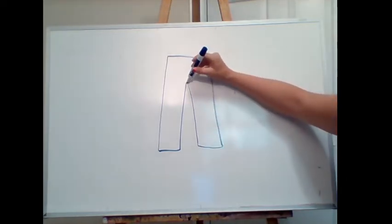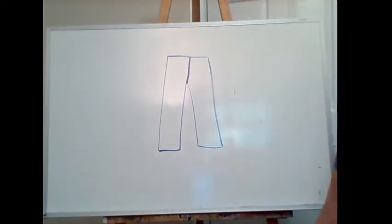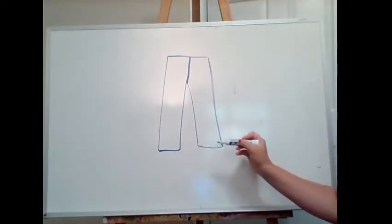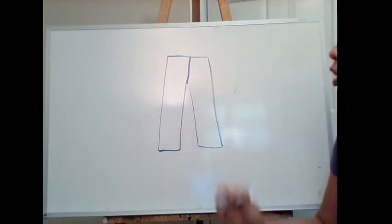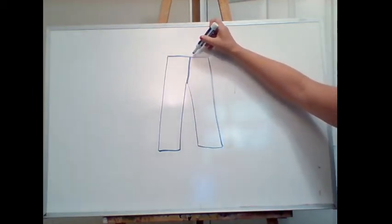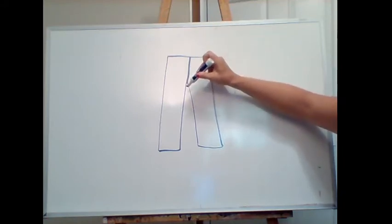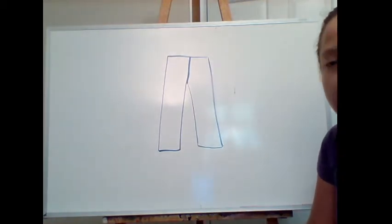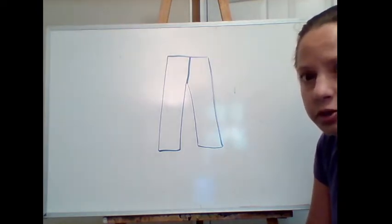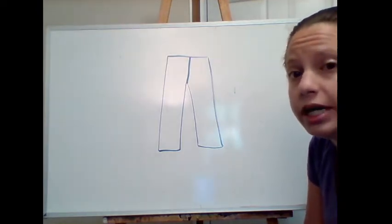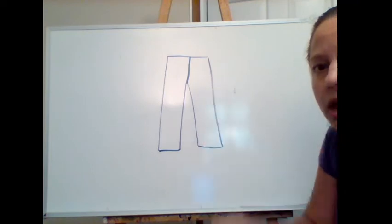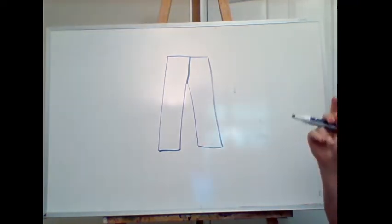The center front seam is what allows the pants to split — to bifurcate — into two separate parts. You are always going to have a center front seam as well as a center back seam; otherwise the pants can't split. This also goes for knits — sweatpants or leggings are also going to have that center front seam.